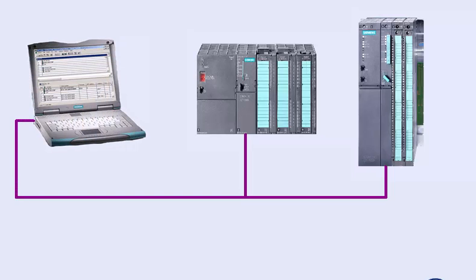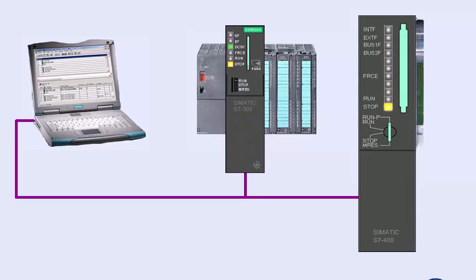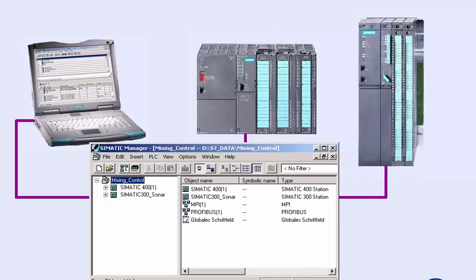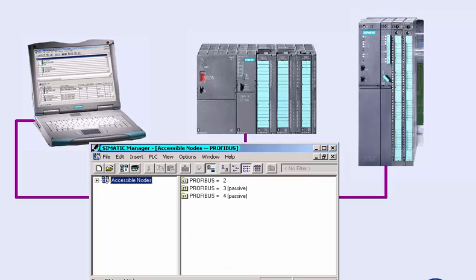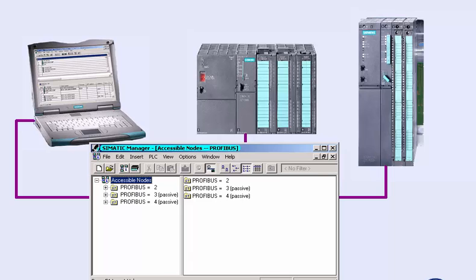The programming device is connected at the PROFIBUS and the PROFIBUS station addresses of the automation devices have been set according to the plant configuration. After switching on the supply voltage, the LEDs at the front of the CPU indicate the operating mode — the power is on and the CPU is in stop mode. The accessible nodes function of the SIMATIC manager shows us all the modules accessible at the bus system and their addresses.